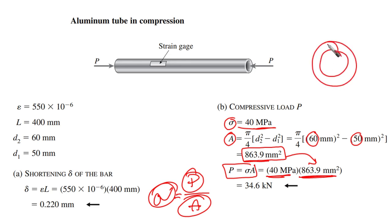We have here the area that we are interested in is this area, which is going to be the outer area minus the inner area, as we mentioned here. Then we are going to obtain P equal to 34.6 kilonewtons. Take care of the conversions and units.